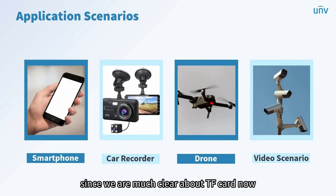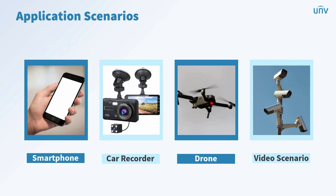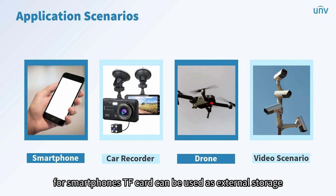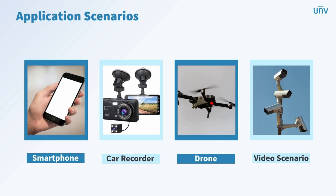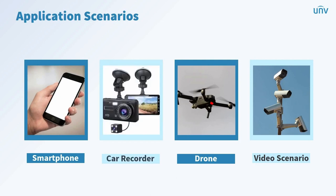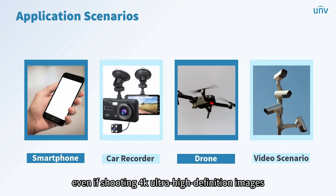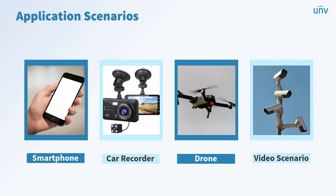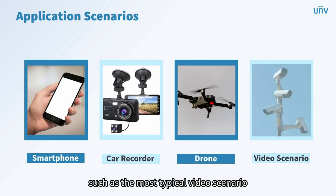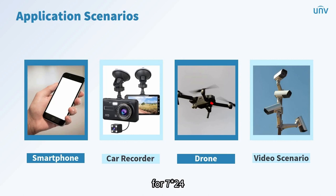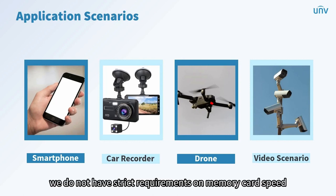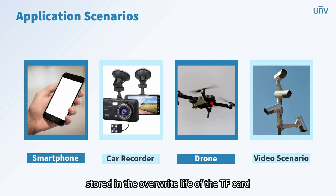Now let's see how TF cards are used in real life. For smartphones, TF cards serve as affordable and accessible external storage. As a mainstream storage device with large capacity and stable read/write performance, TF cards are also suitable for car recorders. A professional TF card can quickly capture dozens of high-speed photos or shoot 4K ultra-high definition images without frame loss. In industrial scenarios such as continuous 7x24-hour video recording, the key requirements are data storage capacity and the overwrite life of the TF card rather than strict speed requirements.